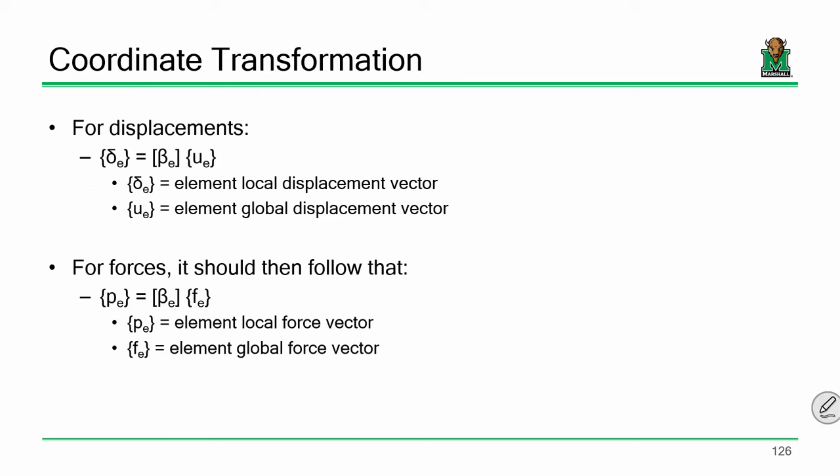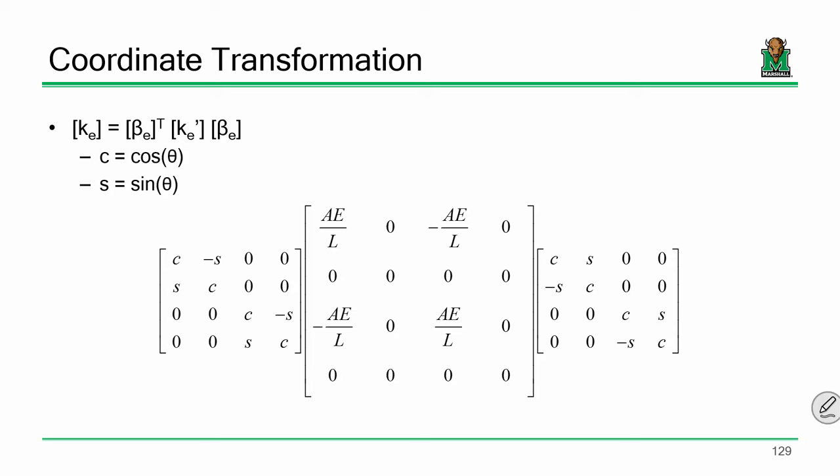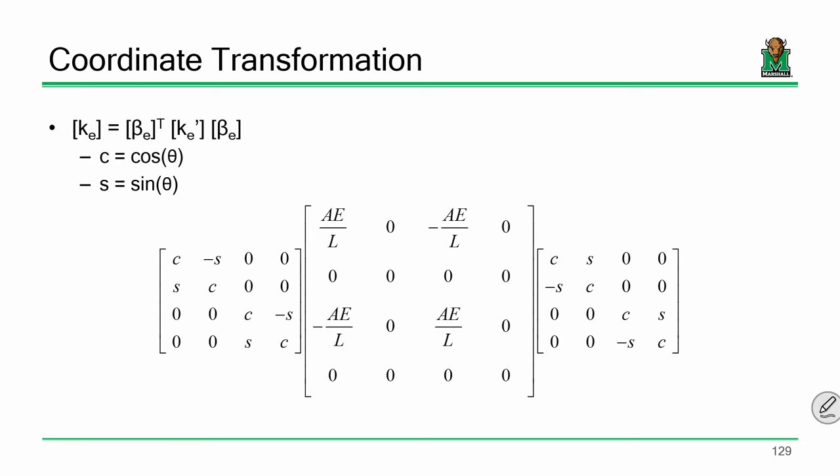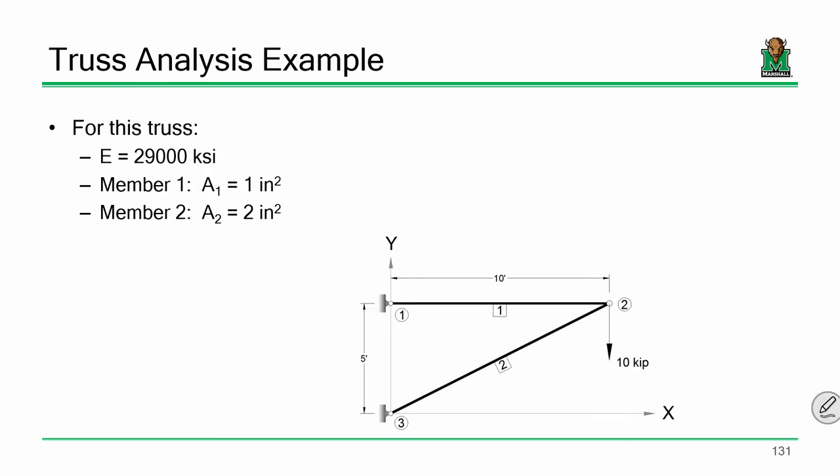If cosine equals one and sine equals zero, look at what happens: the local matrix is my local stiffness matrix, and if that member is oriented horizontally, the global matrix becomes the same thing. If the coordinate systems are oriented the same way, the local stiffness matrix and the global stiffness matrix will be the same. It's only when members get oriented at angles that the global matrix changes. Let me walk you through a quick example.